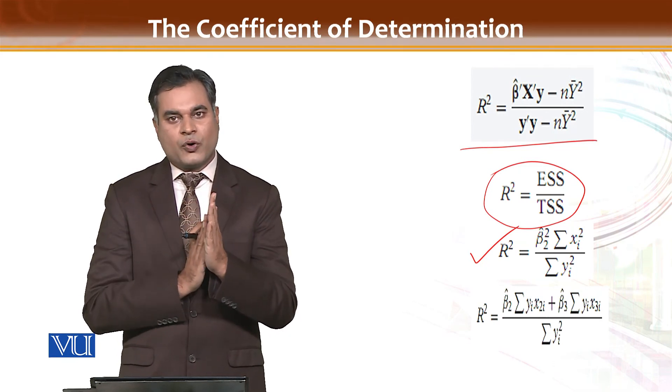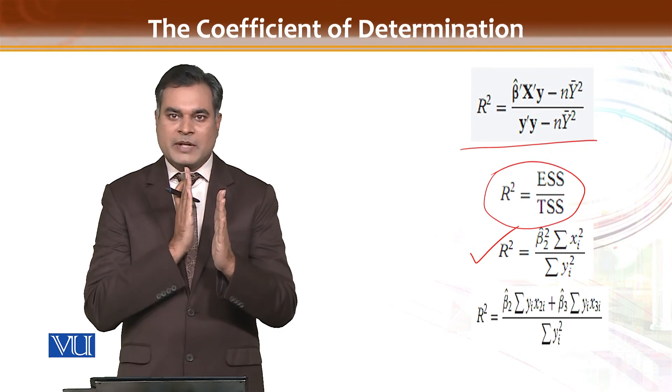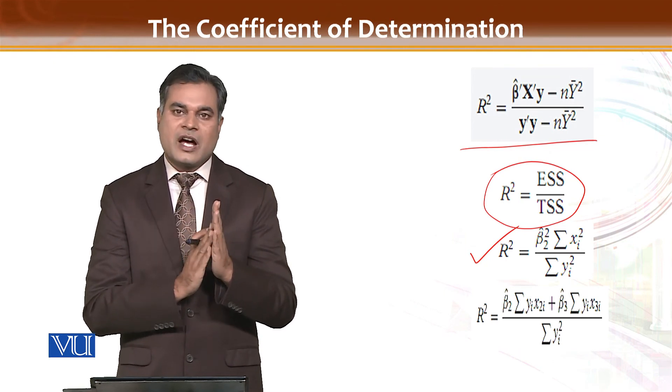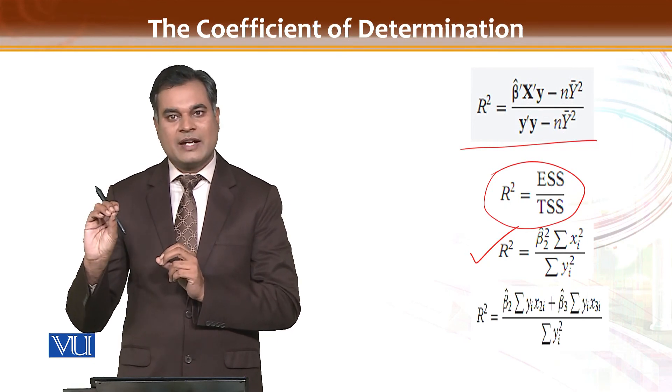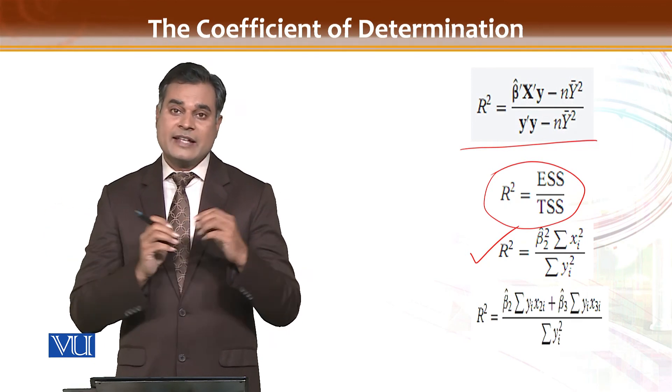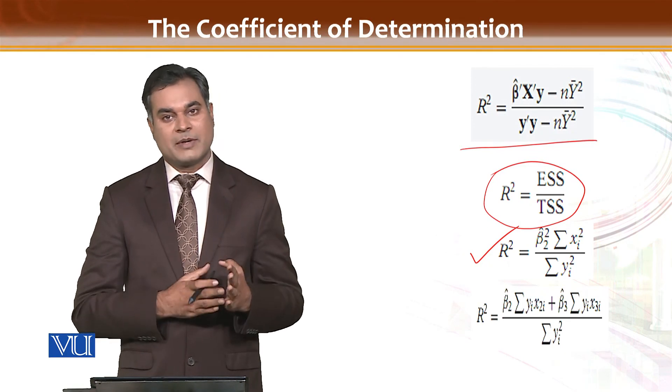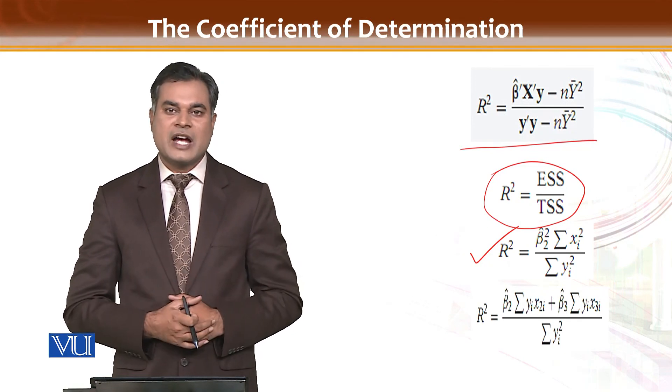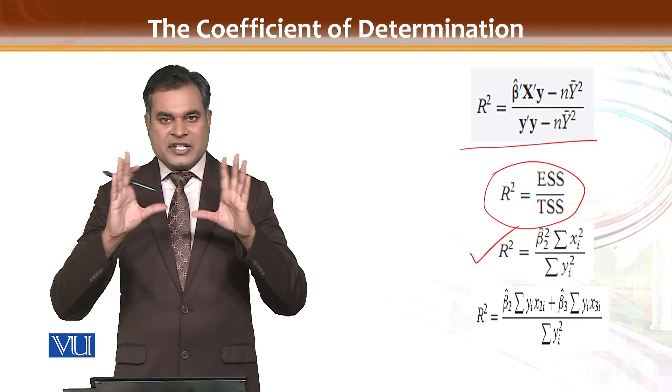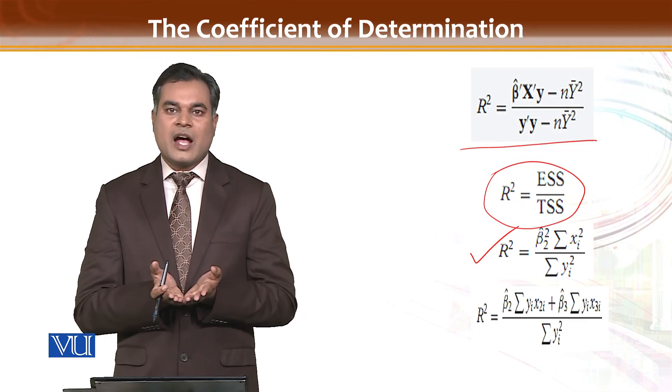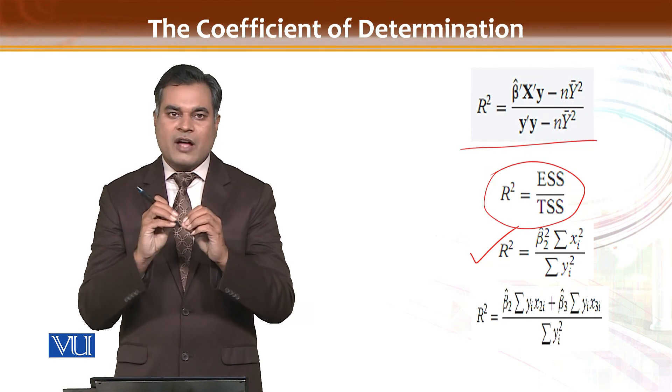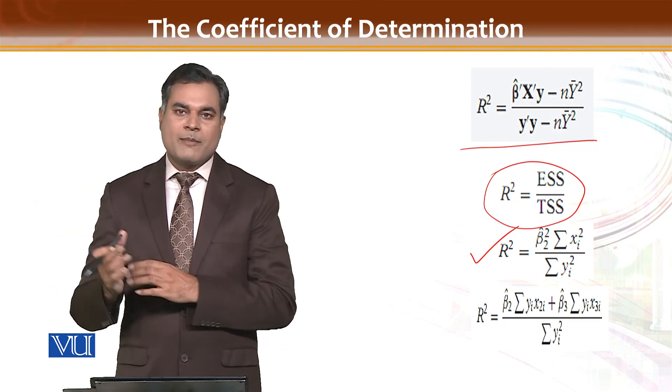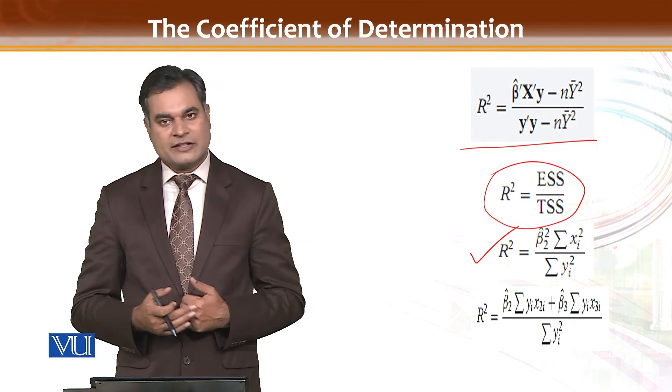If R square is equal to 0.4, it is your explained sum of square. That's why R square is generally used as a criterion in the model - how many changes are within the model and how many changes are outside the model. Outside the model changes are explained by your residual.